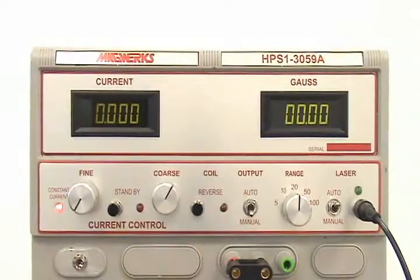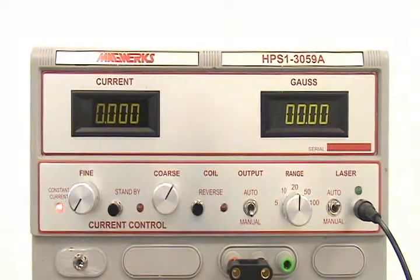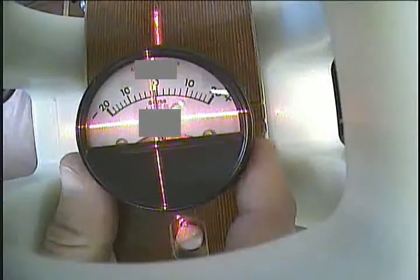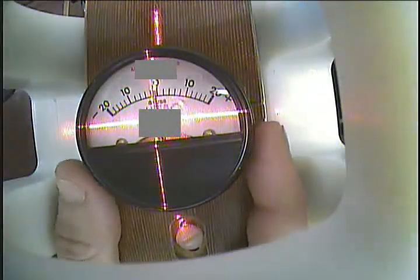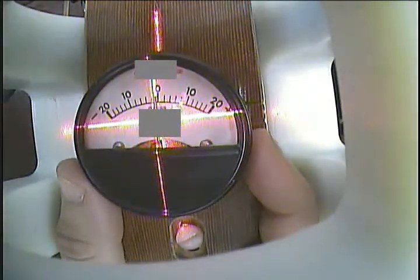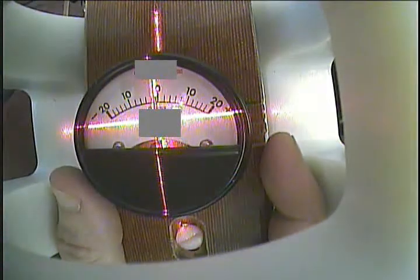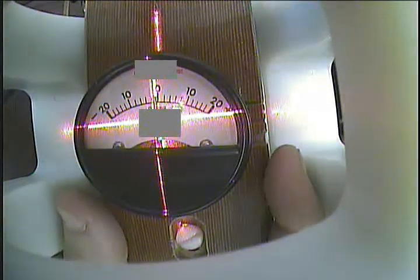In less than five minutes the test is complete. Any magnetometer in the market today can be checked just as easily. Now we will demonstrate how to operate the system manually when magnetometers fail the automatic test to figure out just how far out of calibration they are.